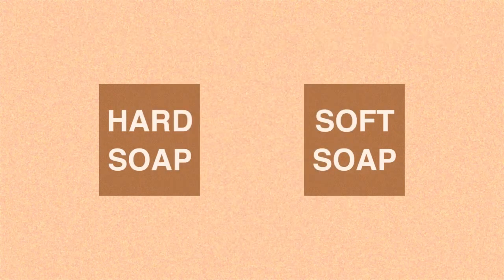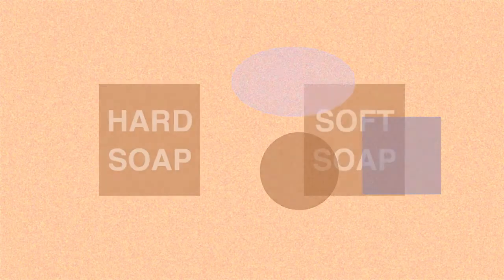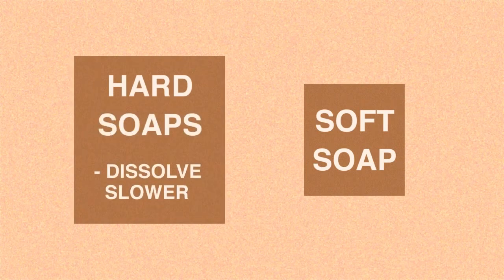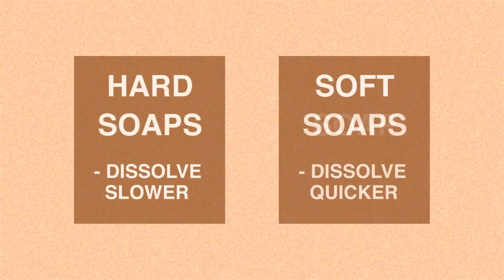Soaps can be hard, meaning they can be moulded into shapes, typically a bar, or they can be soft like those found in hand washes, which are liquified and kept in bottles. In addition, hard soaps dissolve more slowly, whereas soft soaps dissolve more quickly.